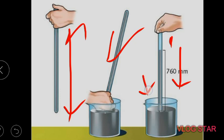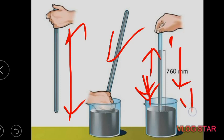If the atmospheric pressure on the water is more, then the water column will be higher and the water will go further up. If the atmospheric pressure is less, then the water will go further down.